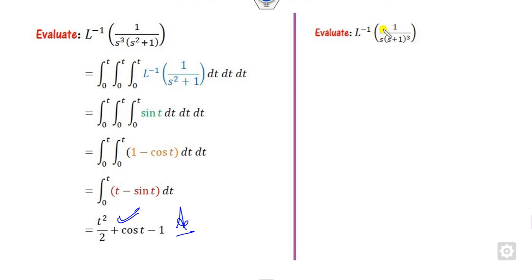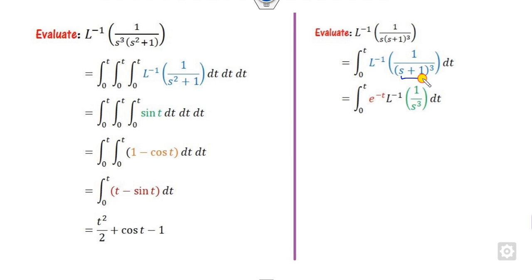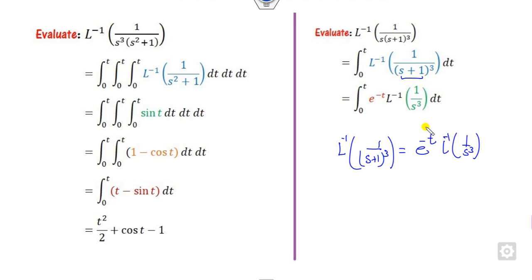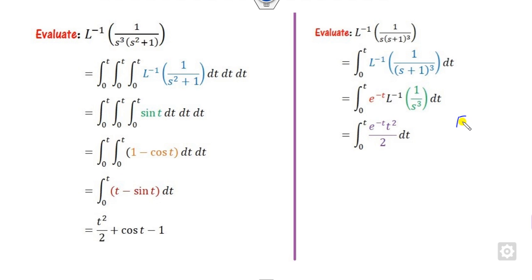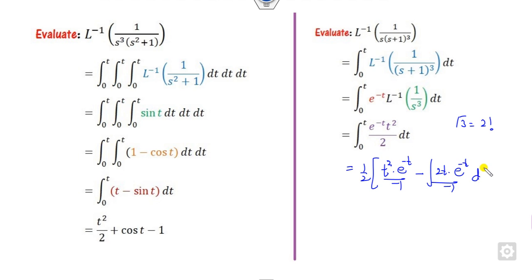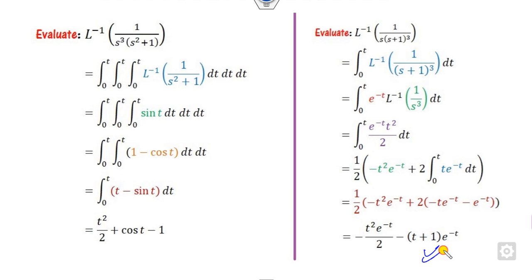Similarly, in the next example there is 1/s, so you take one integration over the remaining part. The Laplace inverse of (s+1) was already discussed in Type 1 lectures. For the Laplace inverse of 1/s³, you divide and multiply by the gamma function of 3, which gives t². The gamma function of 3 equals 2 factorial. Then you integrate by parts to get the required answer.